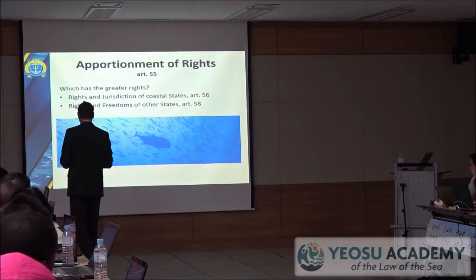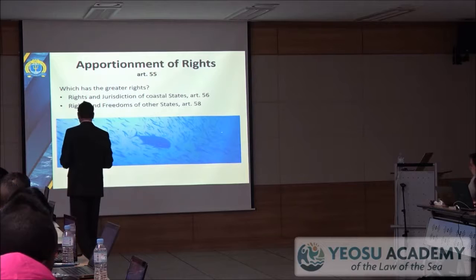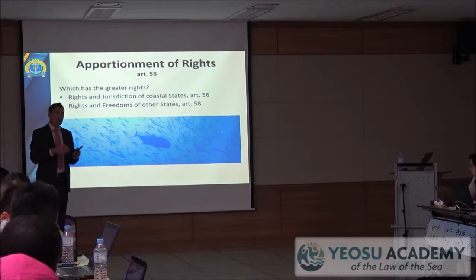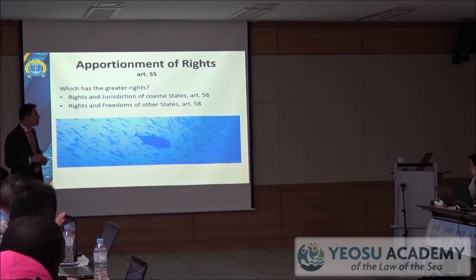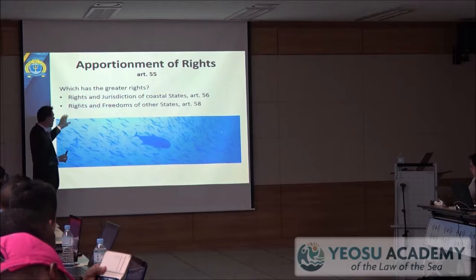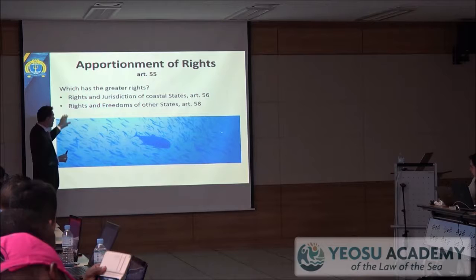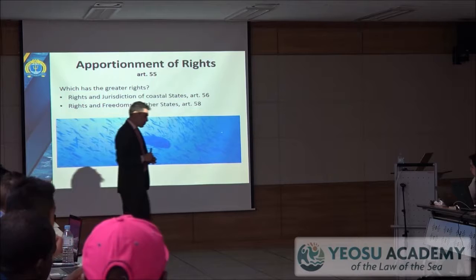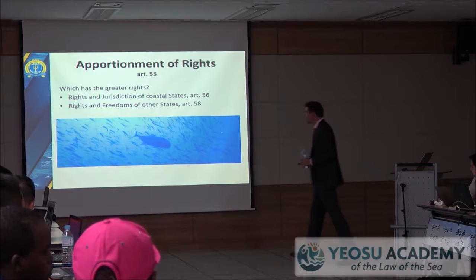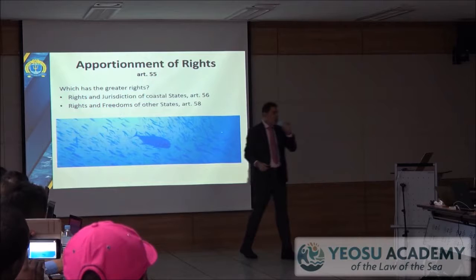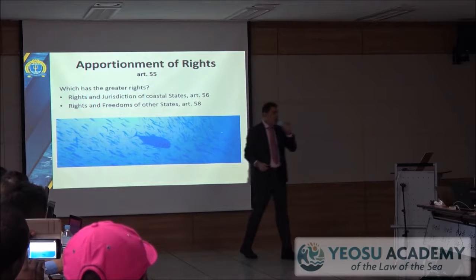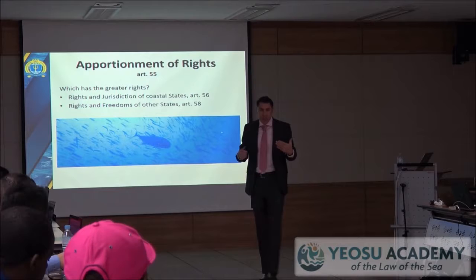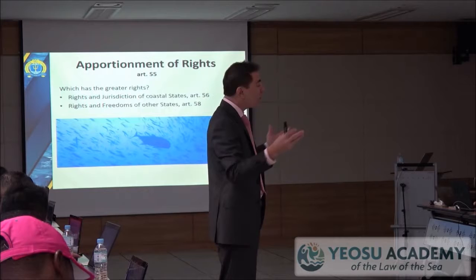We're going through Part 5 of UNCLOS. The coastal state has rights and jurisdiction in the EEZ; everybody else has rights and freedoms. Which has the greater rights? Freedoms is considered a higher species of rights than jurisdiction. Therefore, coastal states have limited rights and all the remaining rights flow to the international community.